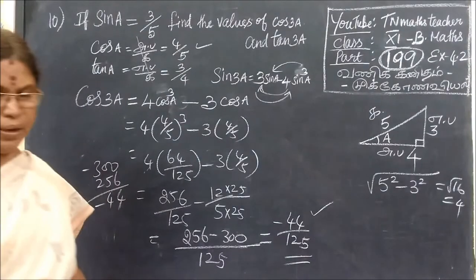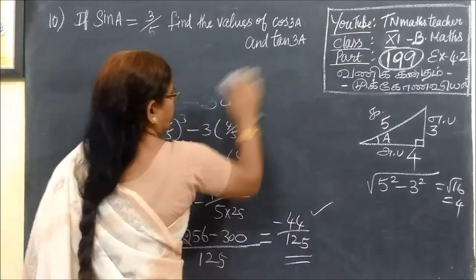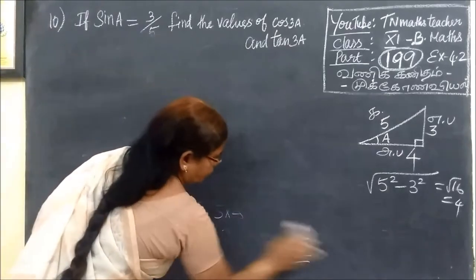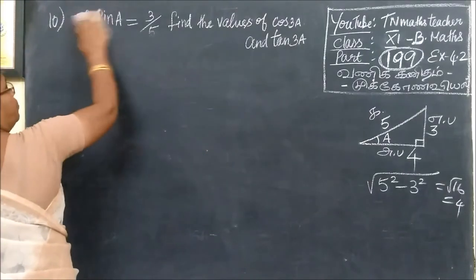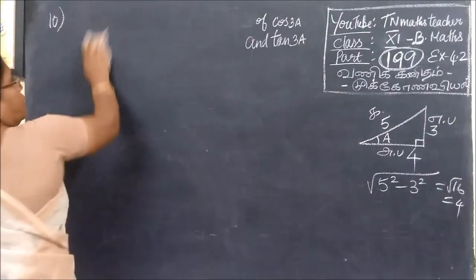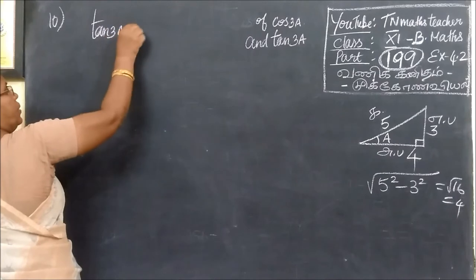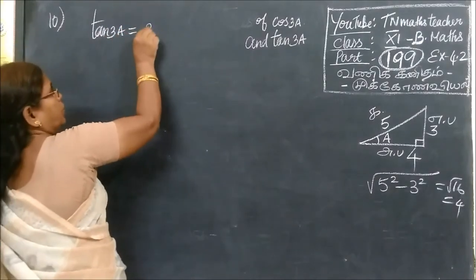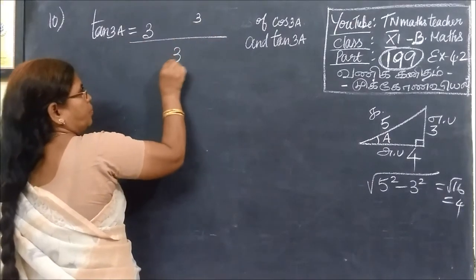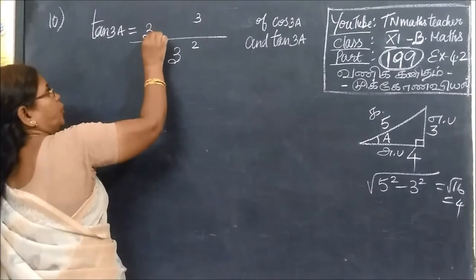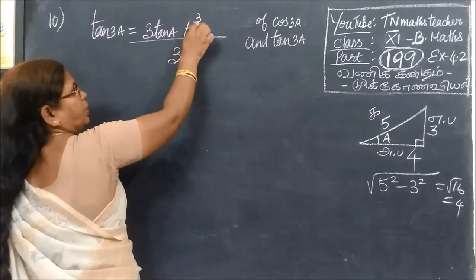Now our number 3 will become 1. Tan 3. This is rare. Here is tan 3A. Tan 3A is equal. Here is 3. Here is 2. Here is tan — here is a power. Here is tan. Tan A is opposite by adjacent.